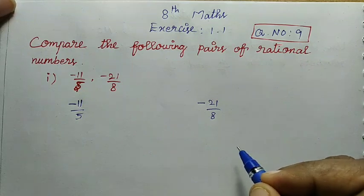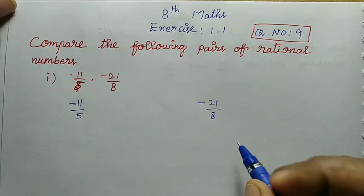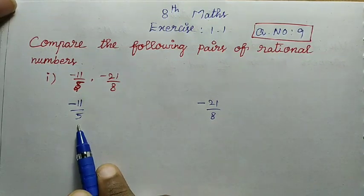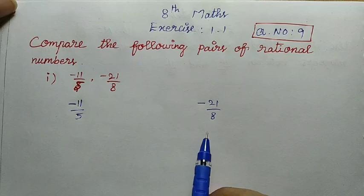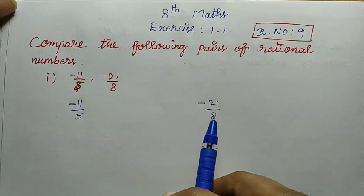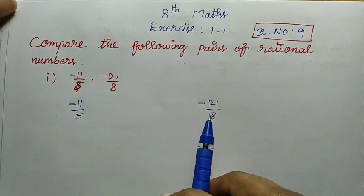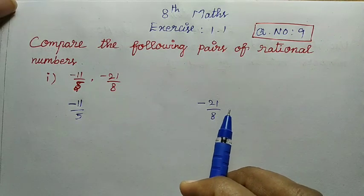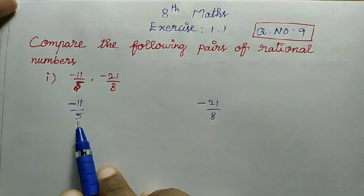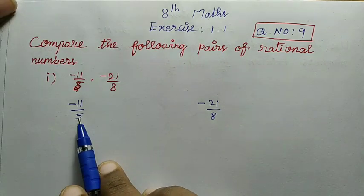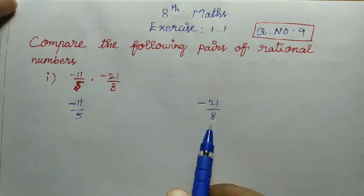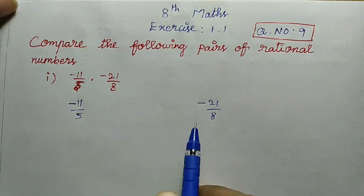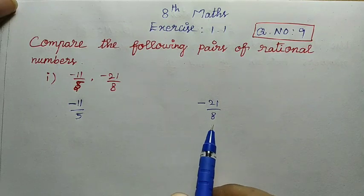First, note the denominator value. We will compare the same numerator — whether it is greater or smaller. Otherwise, we will change the number. The denominators are 5 and 8, so we find the LCM. LCM of 8 and 5 is 40.